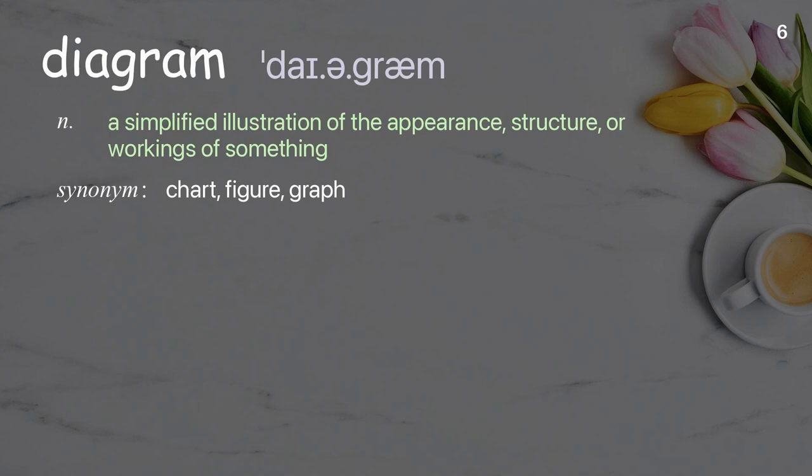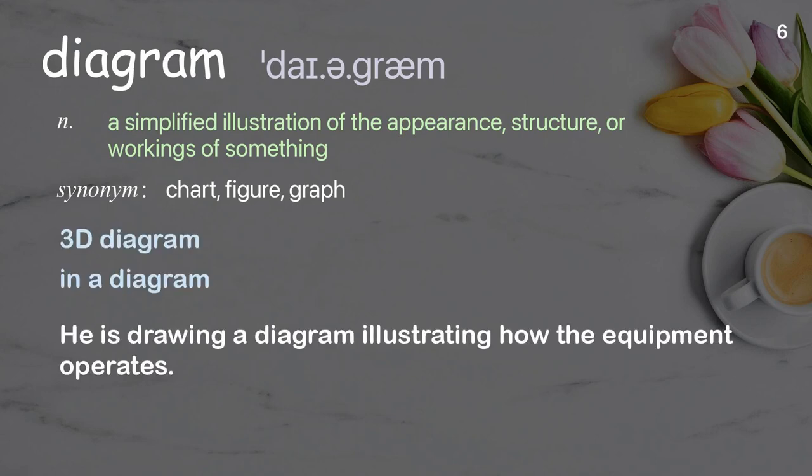Diagram: A simplified illustration of the appearance, structure, or workings of something. Examples: 3D diagram. In a diagram. He is drawing a diagram illustrating how the equipment operates.